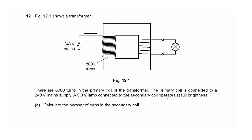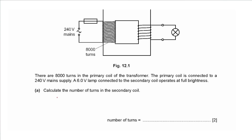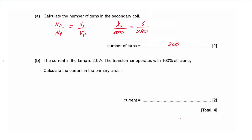Question 12: a transformer has 8000 turns in the primary coil connected to a 240 V supply; a 6 V lamp connected to the secondary coil operates at full brightness, so the secondary voltage is 6 V. Calculate the number of turns in the secondary coil. Using Ns/Np = Vs/Vp: Ns = 8000 × 6 ÷ 240 = 200 turns.